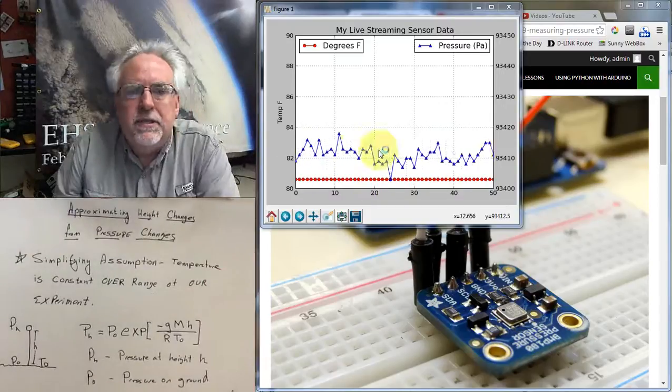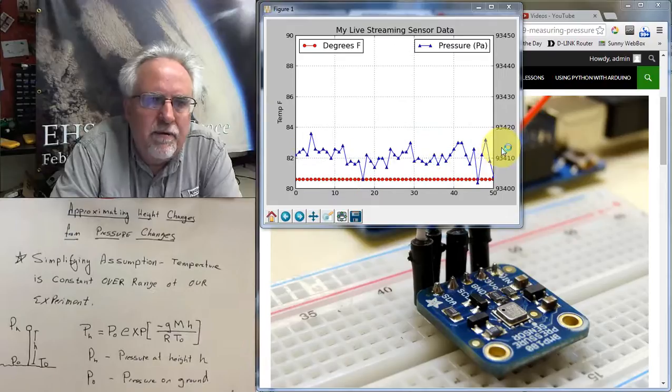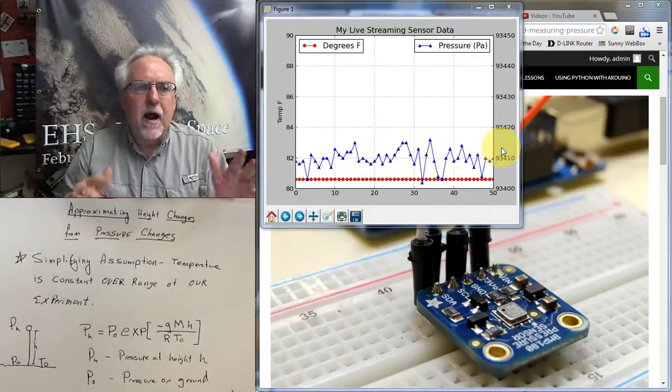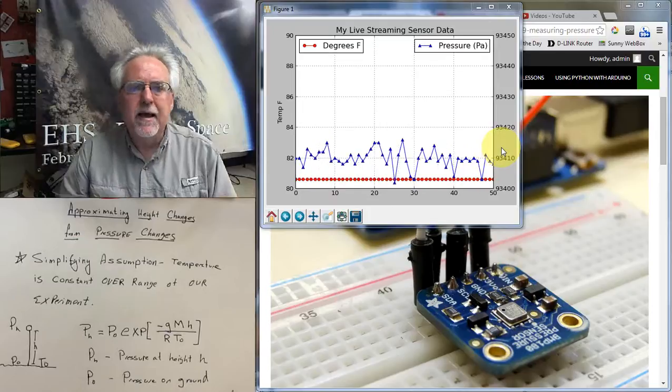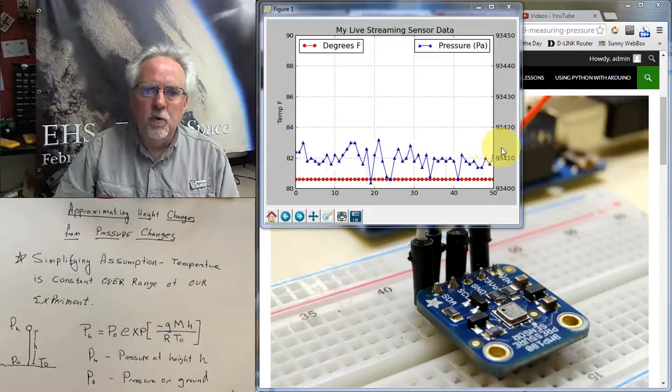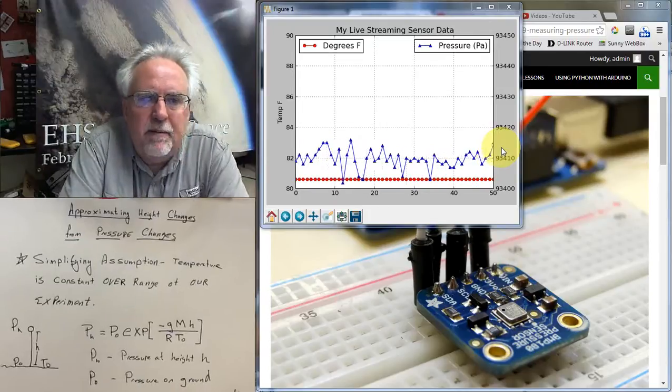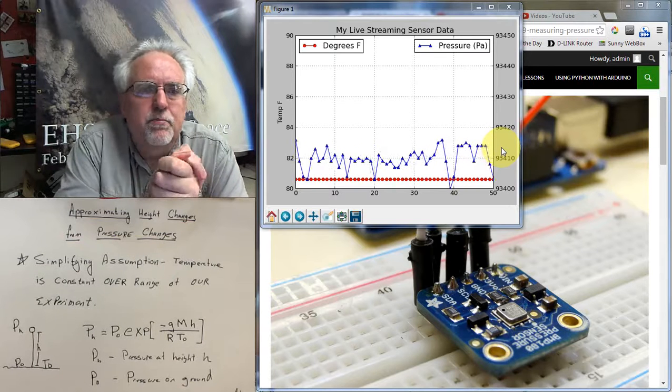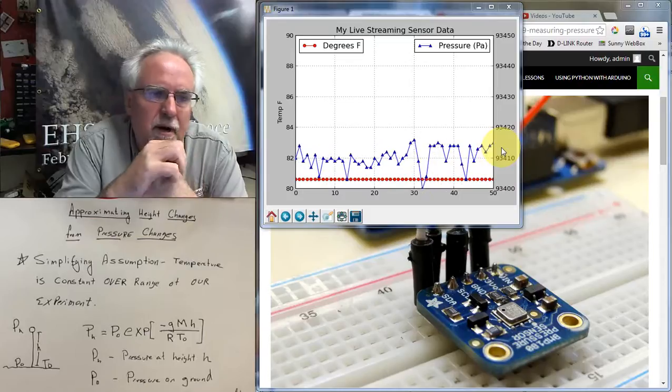And so kind of the question that that brings up then is, can we use this data stream that we have coming off of this BMP 180 and create sort of a height-o-meter where I can measure how high I am above the floor based on the measurement that I'm getting from the pressure sensor?